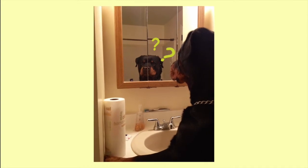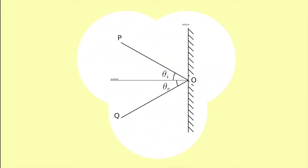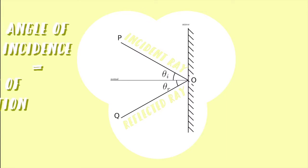Have you ever looked at yourself in the mirror and wondered how the image in the mirror is formed? Well, this process is called reflection. Reflection is an occurrence when a ray of light strikes a plain mirror and is reflected. The incoming ray of light is called the incident ray, the outgoing ray is called the reflected ray, and the line at right angles to the mirror's surface at the point where the incident ray hits the mirror is called the normal line. The law of reflection states that the angle of incidence is always equal to the angle of reflection.